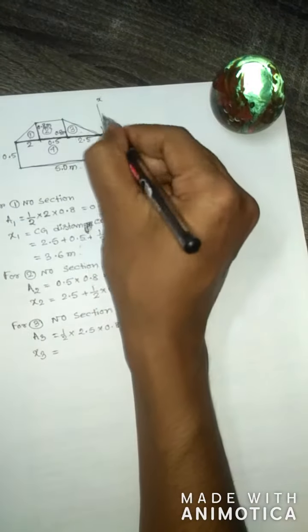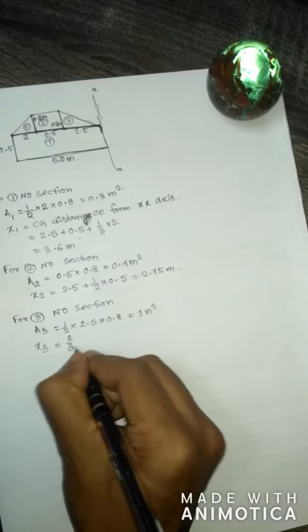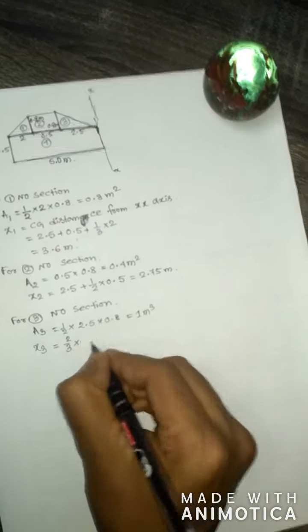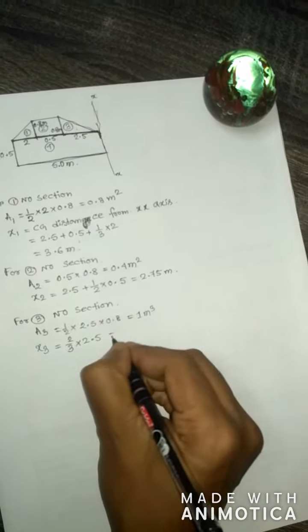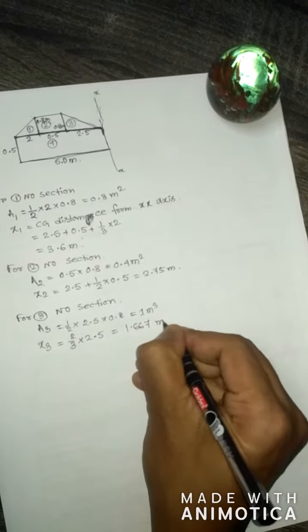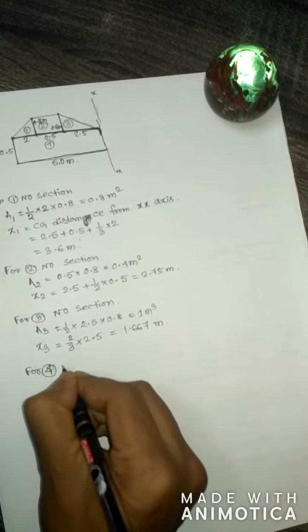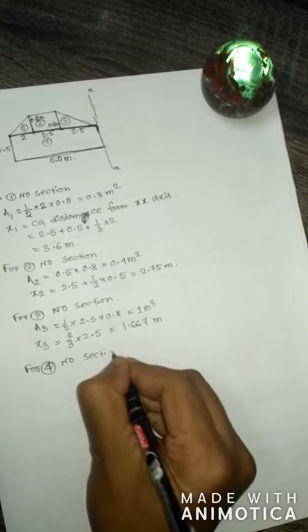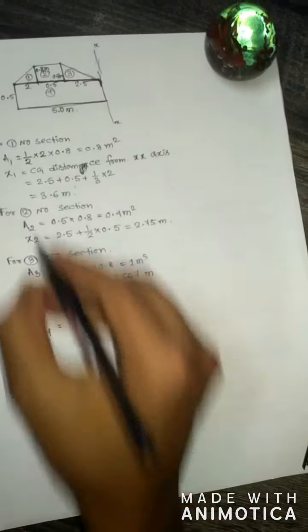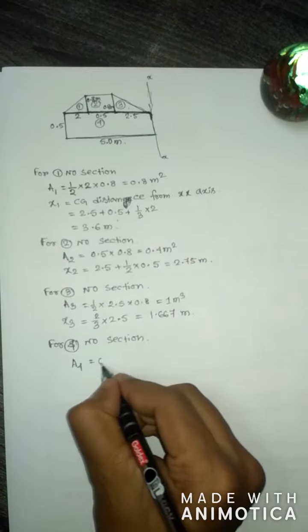For section number 3, area A3 equals half of base 2.5 into height 0.8, equal to 1.0 m². The distance x3 from the XX axis equals 2/3 into base 2.5.